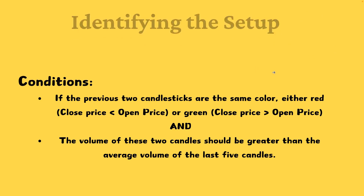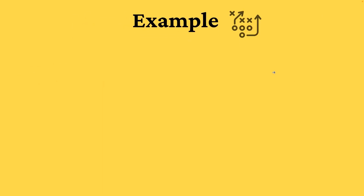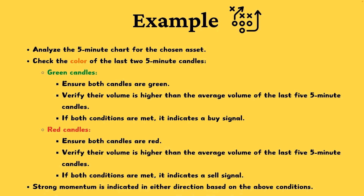Imagine we're looking at a five-minute chart. If the last two five-minute candles are green and their volume is higher than the average volume of the last five five-minute candles, our conditions are met for a buy. If the last two five-minute candles are red and their volume is higher than the average volume of the last five five-minute candles, our conditions are met for a sell. This indicates strong momentum in either direction.